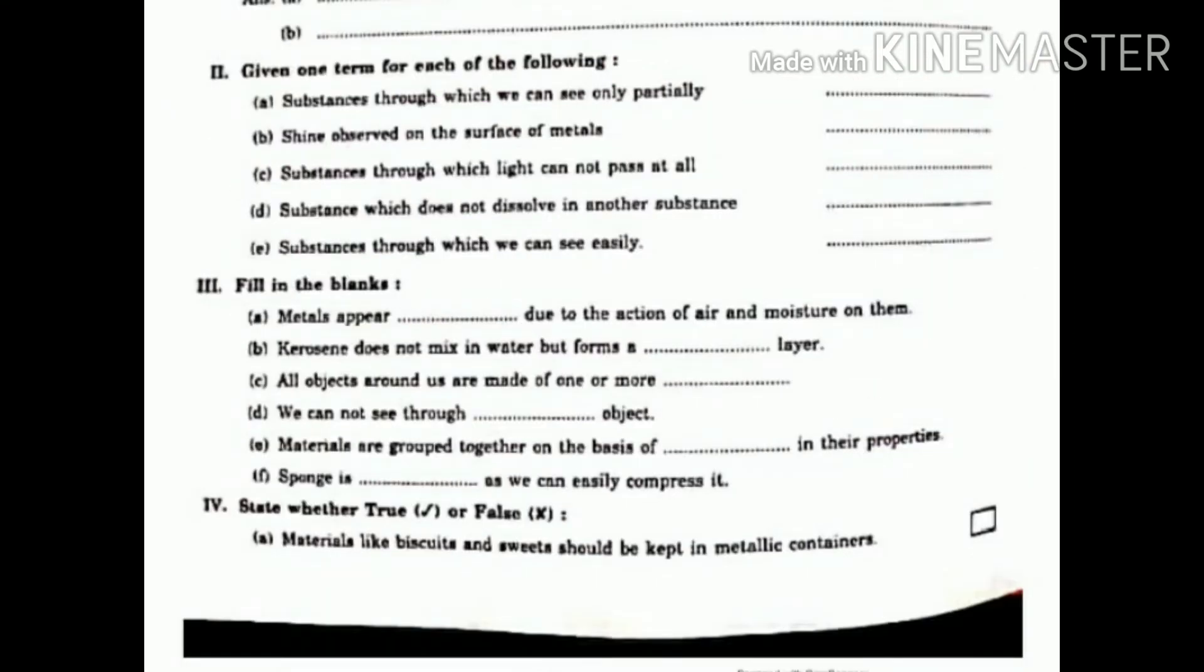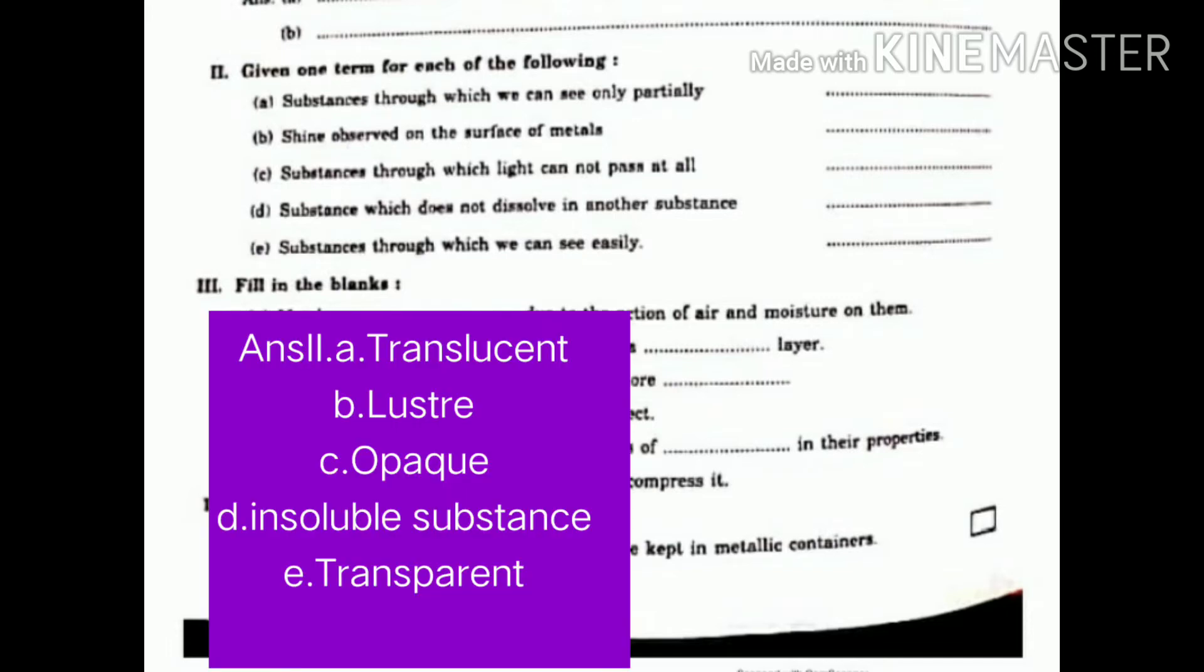Second. Give one term for each of the following. A. Substances through which we can see only partially. Answer. Translucent. B. Shine observed on the surface of metals. That is luster.